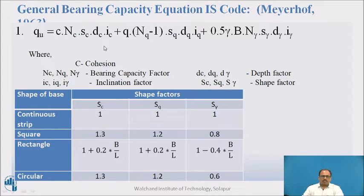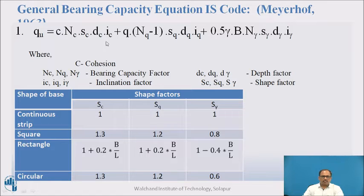General bearing capacity equation as per IS code — Meyerhof's equation — is given as: Q = C·Nc·Sc·Dc·Ic + q·(Nq − 1)·Sq·Dq·Iq + 0.5·γ·B·Nγ·Sγ·Dγ·Iγ.